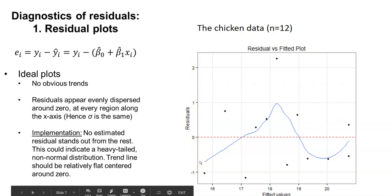The ideal plot that we're seeing here would be one with no obvious trends. That is, the residuals appear evenly dispersed around zero at every region along the x-axis. This would indicate that assumption of constant variance is held.